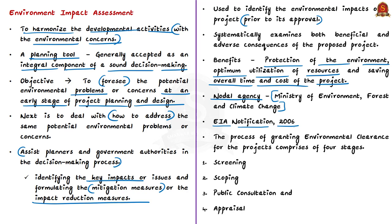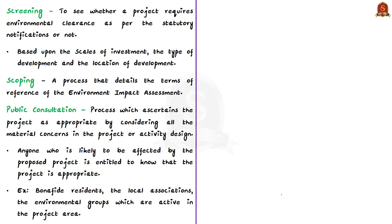The process comprises four stages: screening, scoping, public consultation and appraisal. Screening determines whether a project requires environmental clearance as per statutory notifications, based on the scale of investment, type of development and location. Scoping is the process that details the terms of reference of the Environment Impact Assessment — that is, what things the EIA must look into.